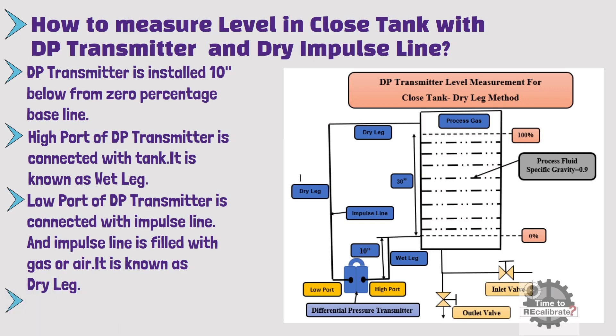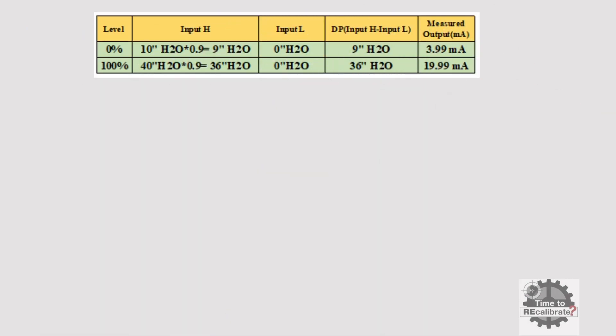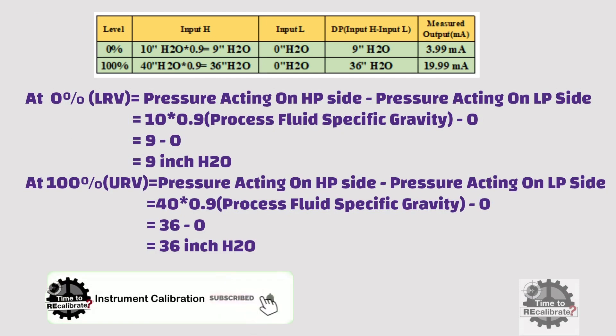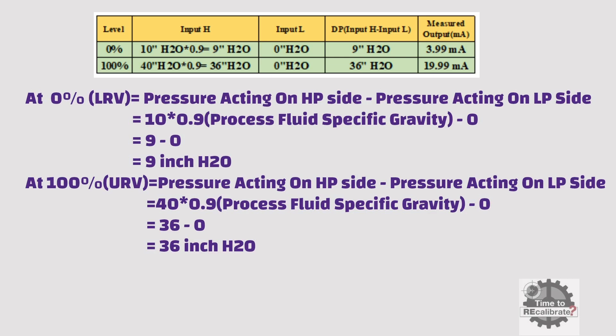Now let's assume that the process fluid's specific gravity is 0.9 in this example. Let's go to the calculation table. At 0% level, the DP transmitter high port side has 10 inch H2O pressure. This pressure is multiplied by the specific gravity of the fluid, which is 0.9 — so 10 multiplied by 0.9 gives 9. Therefore, at 0% level, the transmitter high port side has 9 inch H2O pressure. The DP transmitter low port side is connected with the dry impulse line, so it has 0 inch H2O pressure at both 0% and 100% level. Input high side minus input low side gives differential pressure, so differential pressure is 9 inch H2O at 0% level.